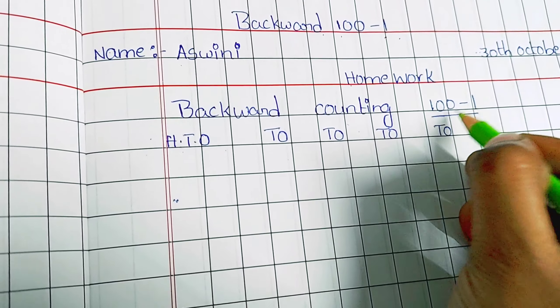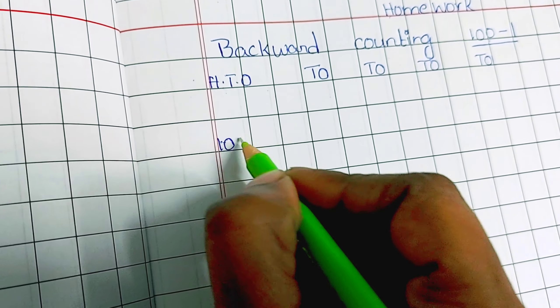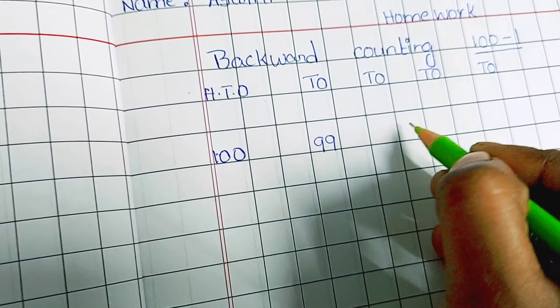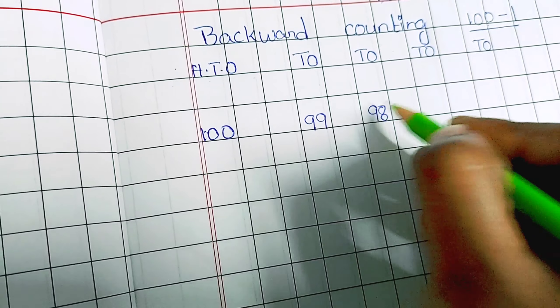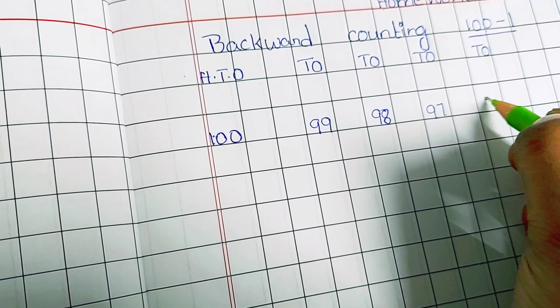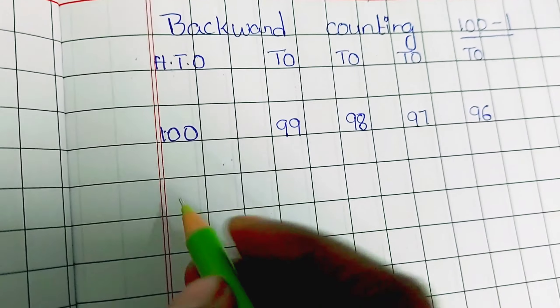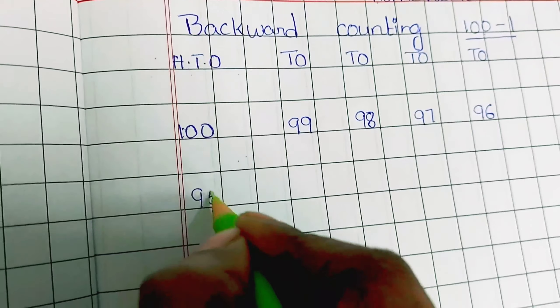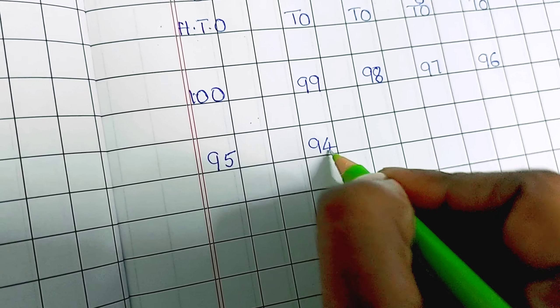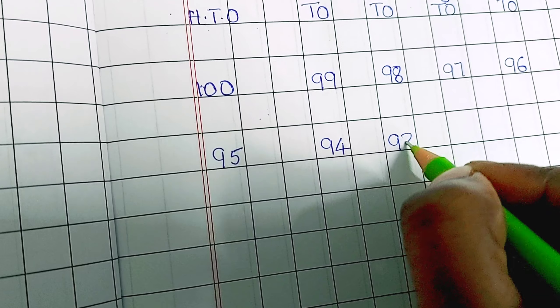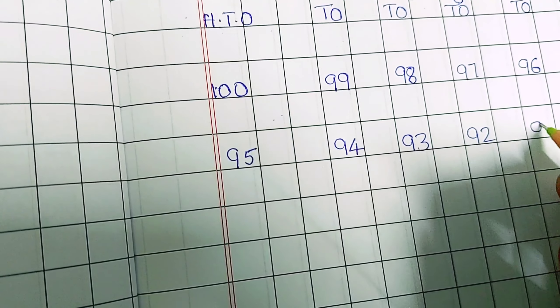Here, first backward counting starts from 100 to 1. So starts with 100, 1, 0, 0, 100, 99, 98, 97, 96. Next, come down and write down next. Leave one line to continue, 95, 94, 93, 92, 91.